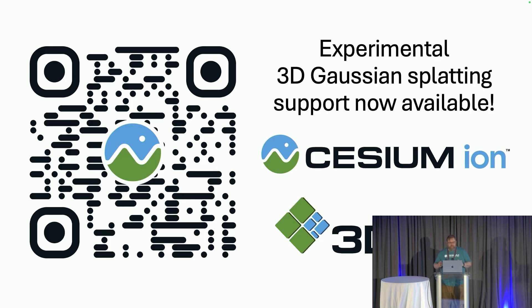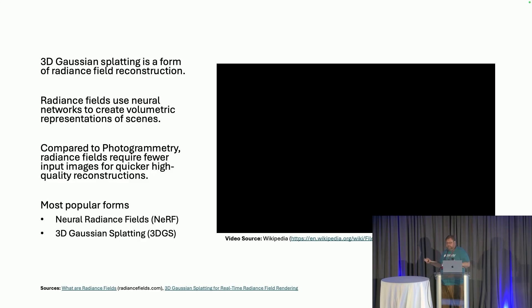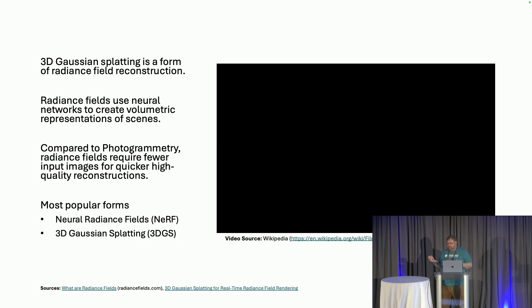Before I go any further, I want to give you a brief introduction to radiance fields. 3D Gaussian splatting is a form of radiance field reconstruction. Radiance fields use neural networks to create volumetric representations of scenes — this is an alternative to photogrammetry, which is used to create reality meshes. Rendering engineers talk about radiance fields as the wave of the future because they offer really high fidelity and can easily capture and represent thin structures, where traditional methods struggle. The video shows the neural radiance field, or NERF, which is one of the two popular forms.